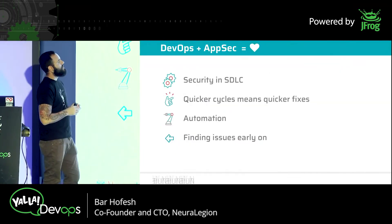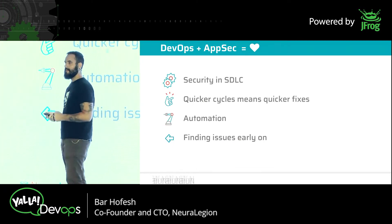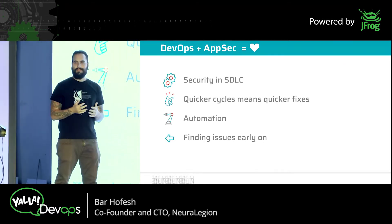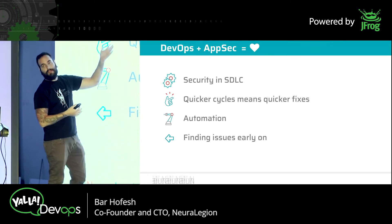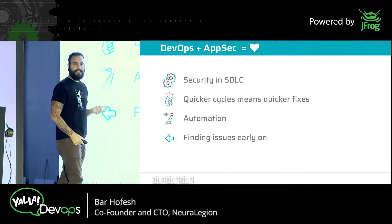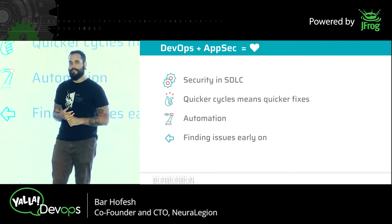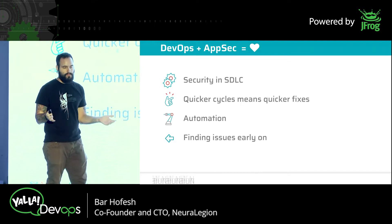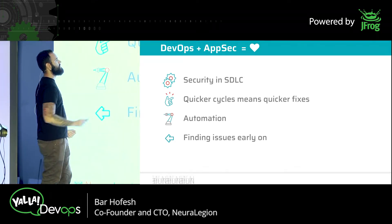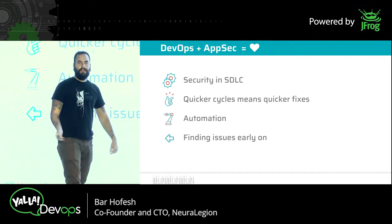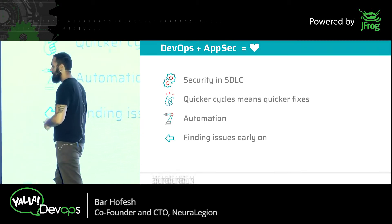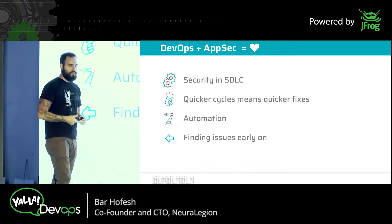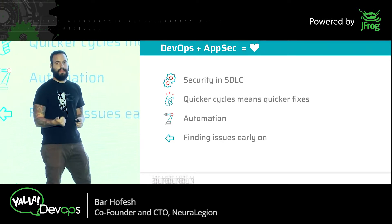We understand that DevOps is our great savior, because having them embrace security - more specifically AppSec - can give us great things. DevOps and AppSec equals love because it really works great together. We have security in the SDLC policy. We don't want security only in production, because if we're getting security only when we hit production, that's most likely already too late - there is now vulnerable code sitting out there that everybody can access. Quicker cycles mean quicker fixes. If the shift-left idea applies to security and we can enjoy the speed that DevOps brings, we can find problems faster, save money, and make the process quicker.